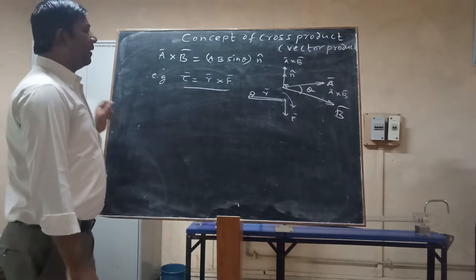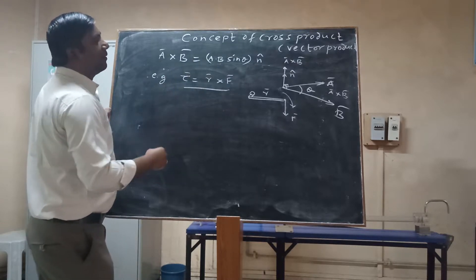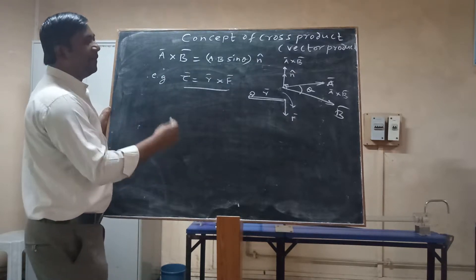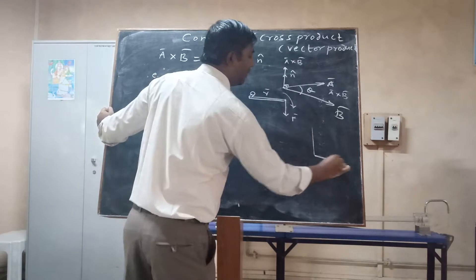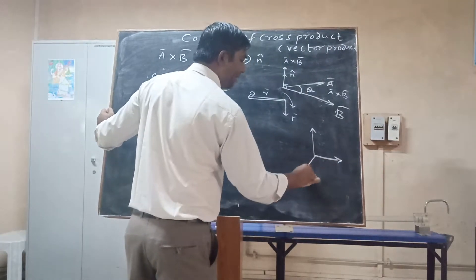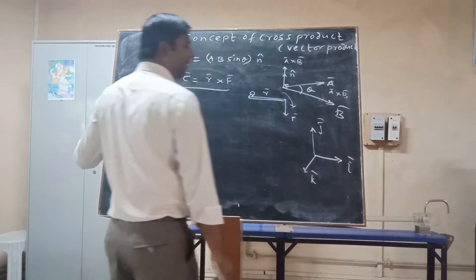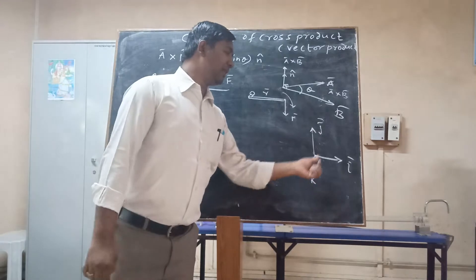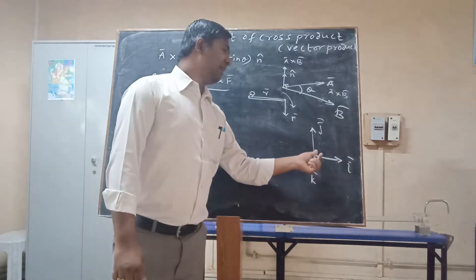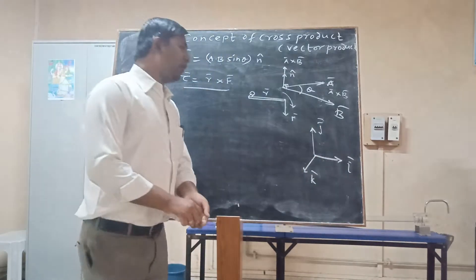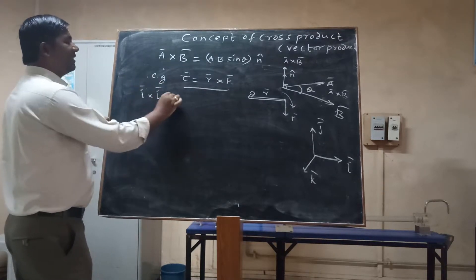Now let us consider how the cross product concept applies to the unit vectors î, ĵ, and k̂. These three vectors are mutually perpendicular to each other: î is along the x-axis, ĵ along the y-axis, and k̂ along the z-axis. Let us find î × î.